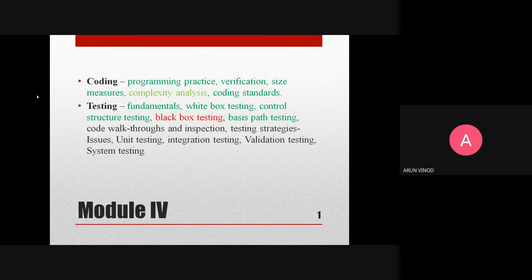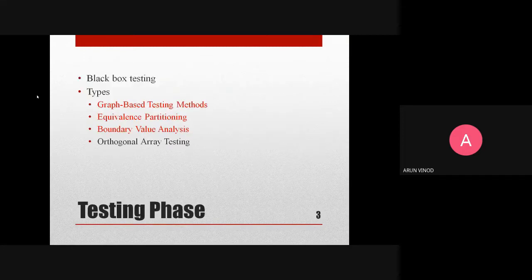Now we are going to discuss black box testing — what it is, when we use it, and the different types. There are four types of black box testing: graph-based testing methods, equivalence partitioning, boundary value analysis, and orthogonal array testing. Today we'll try to complete the first three, and tomorrow we'll discuss orthogonal array testing.